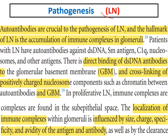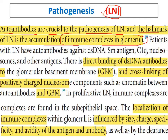The hallmark of lupus nephritis is the accumulation of immune complexes in the glomeruli. Anti-double-stranded DNA binds to the glomerular basement membrane and cross-links with positively charged nucleosome components, depositing immune complexes in the glomerular basement membrane. The localization of these immune complexes — whether in the sub-endothelial or sub-epithelial space — is influenced by the size and charge of the immune complex and the specificity and avidity of the antigen-antibody interaction.